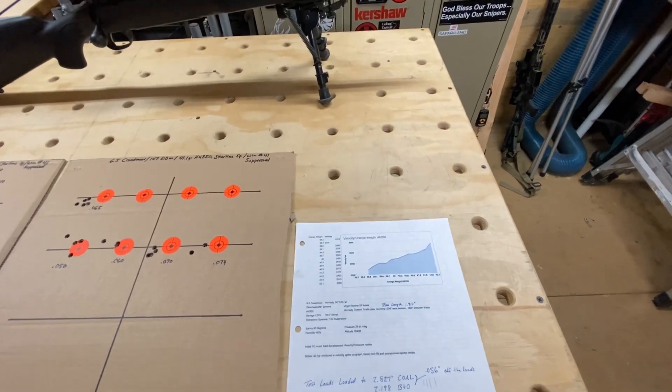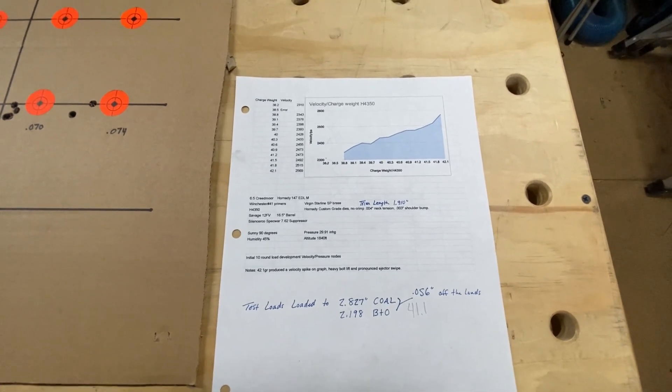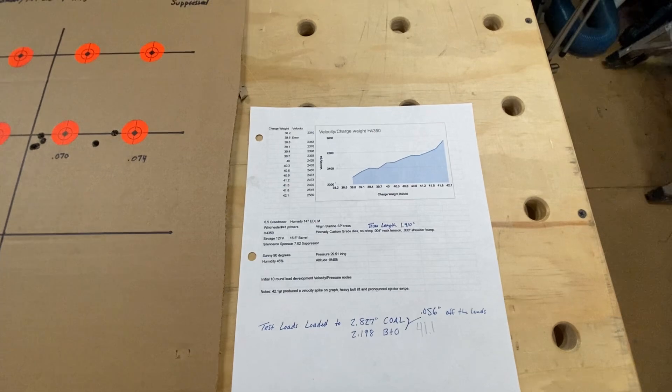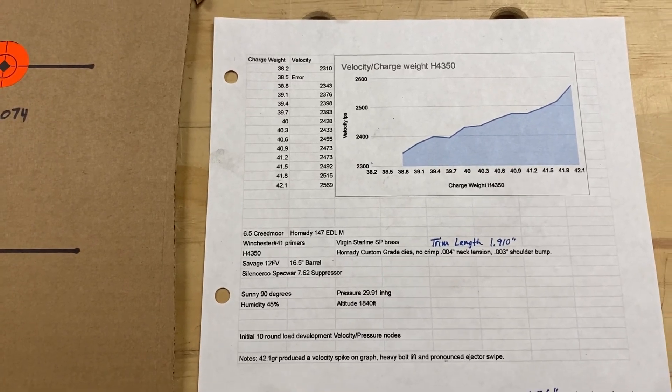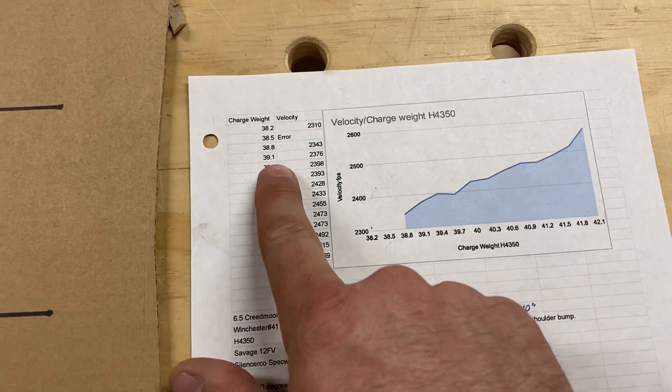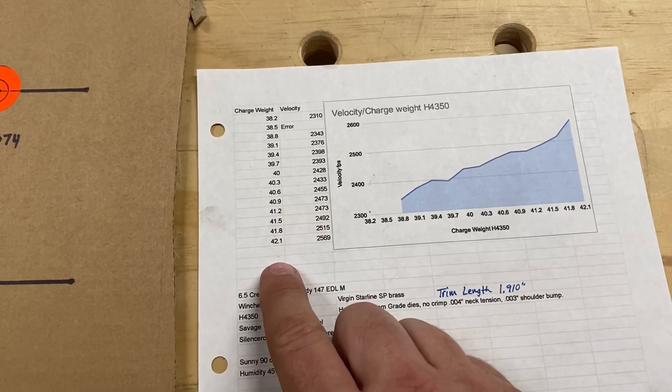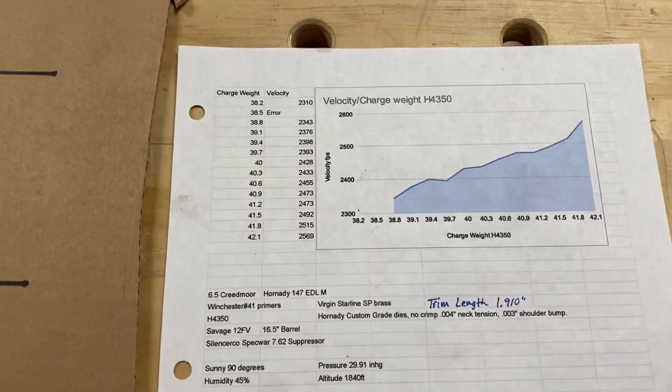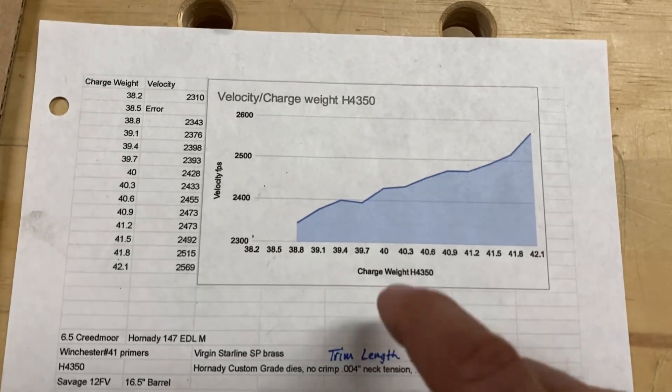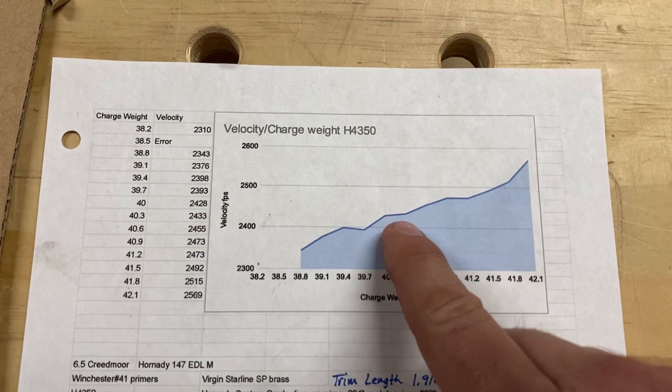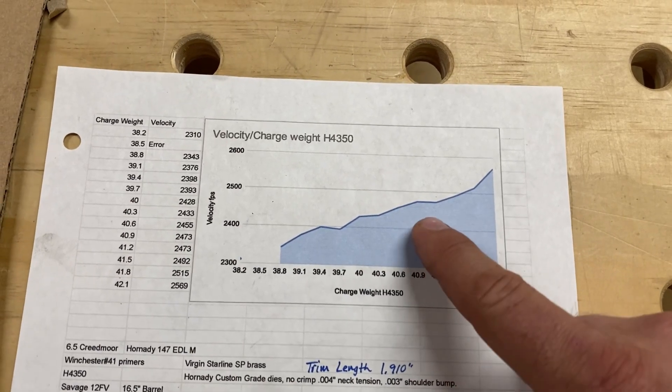So what I did was, you guys can see here, I started out by doing a Satterlee, you guys have probably heard of this, 10 round load development. Let me zoom in here. So what we did was I picked starting load charge weights here. I loaded one for each of the charge weights going up. I shot them over the chronograph and if you guys watched the 45-70, you should be familiar with this. But you can see what we're looking for is kind of these flat spots like this right here. And we've got three of them that look pretty good. I'm always going to kind of tend towards the faster side if I can get it to shoot well.